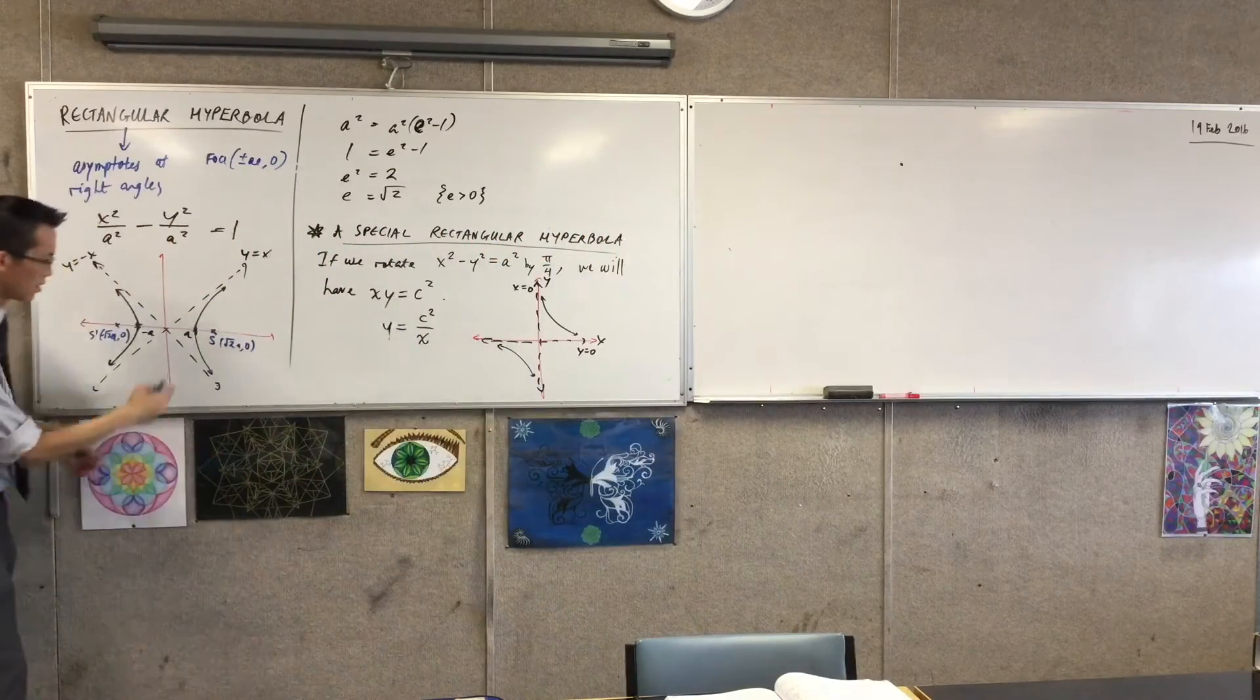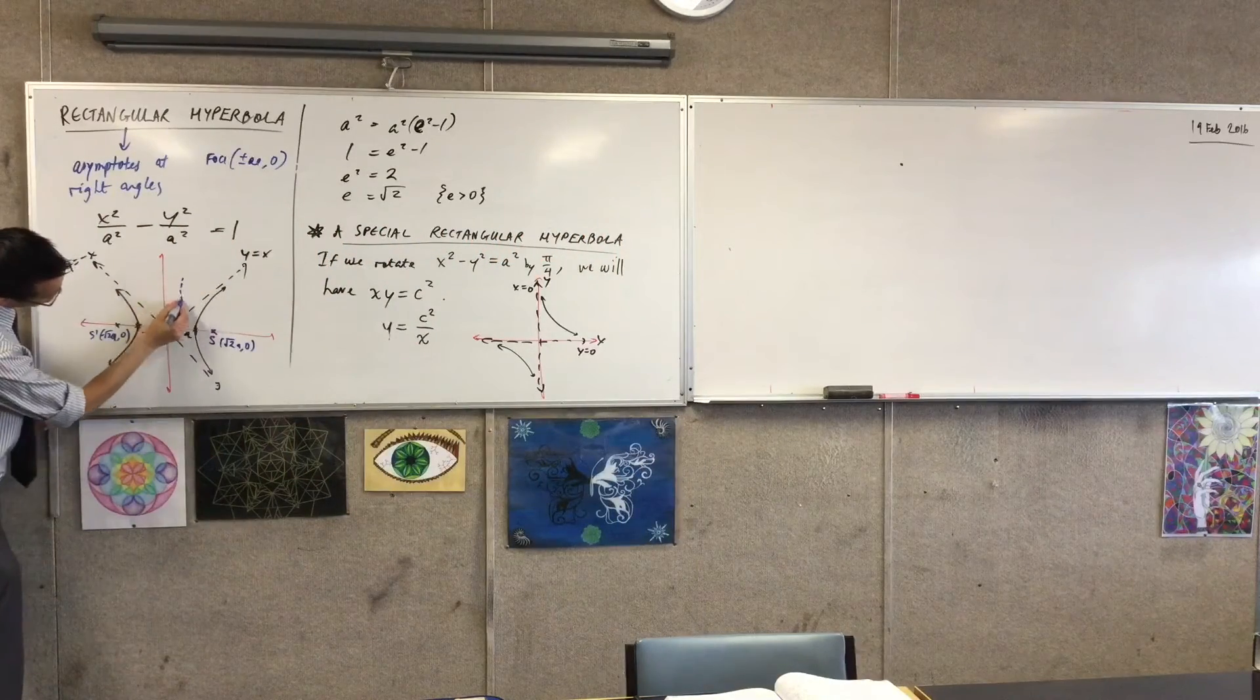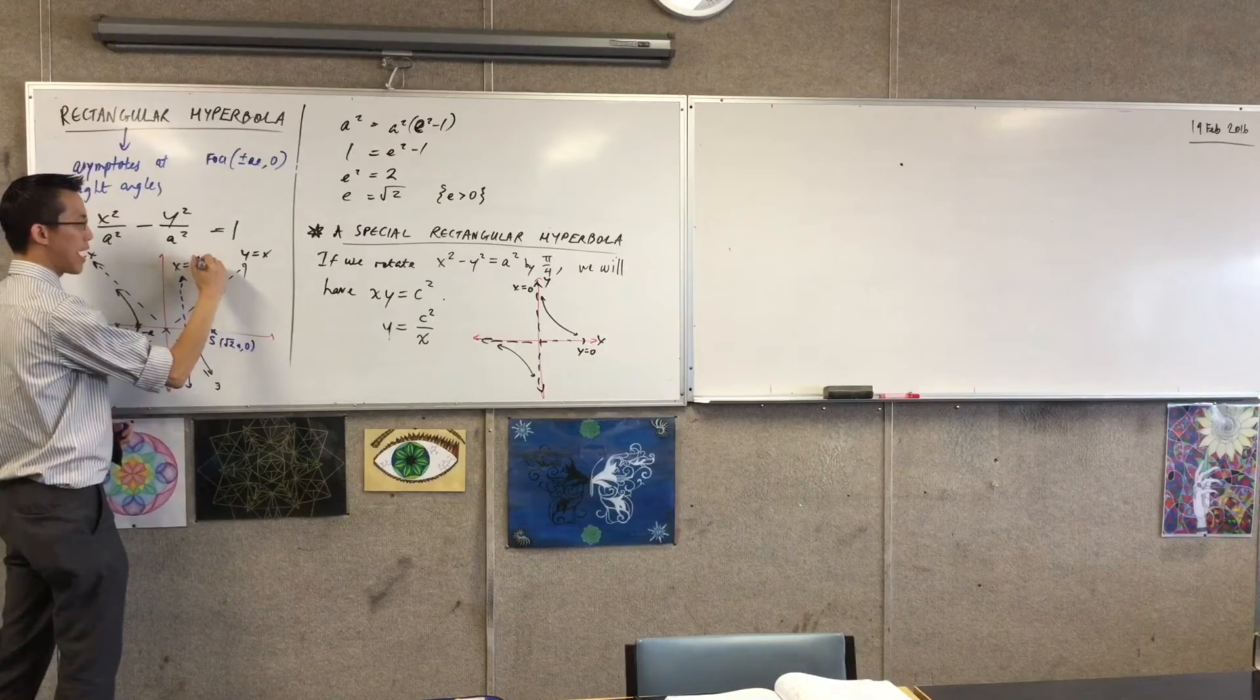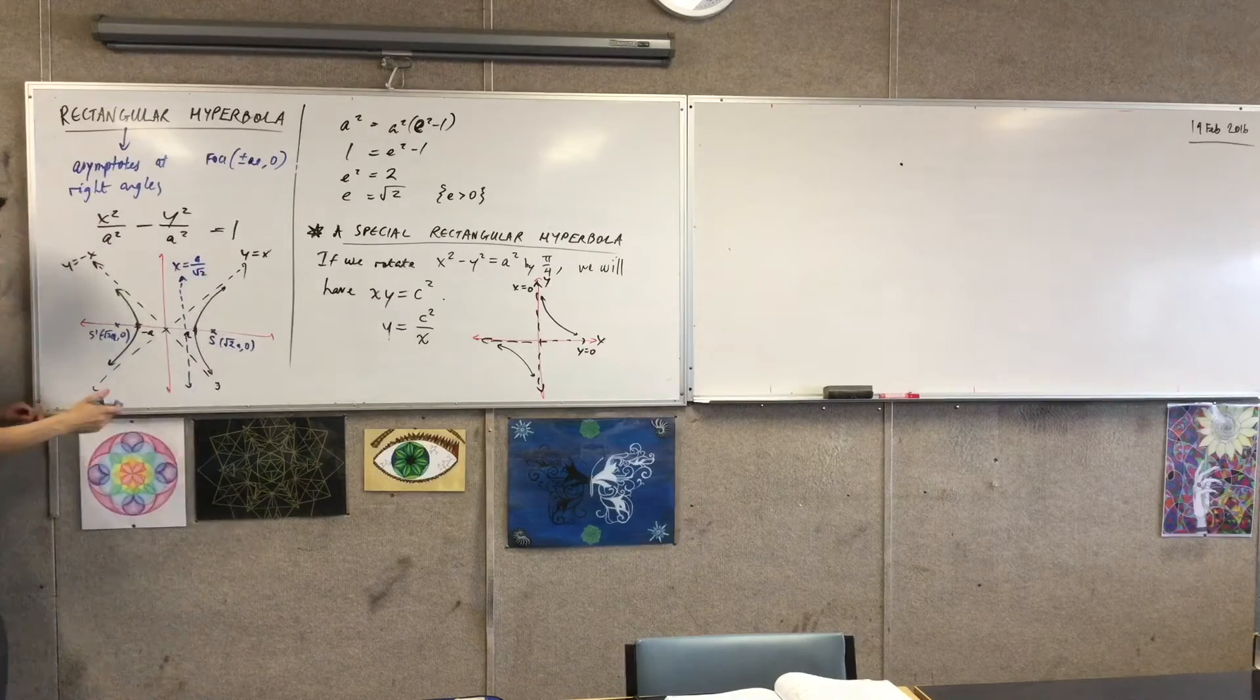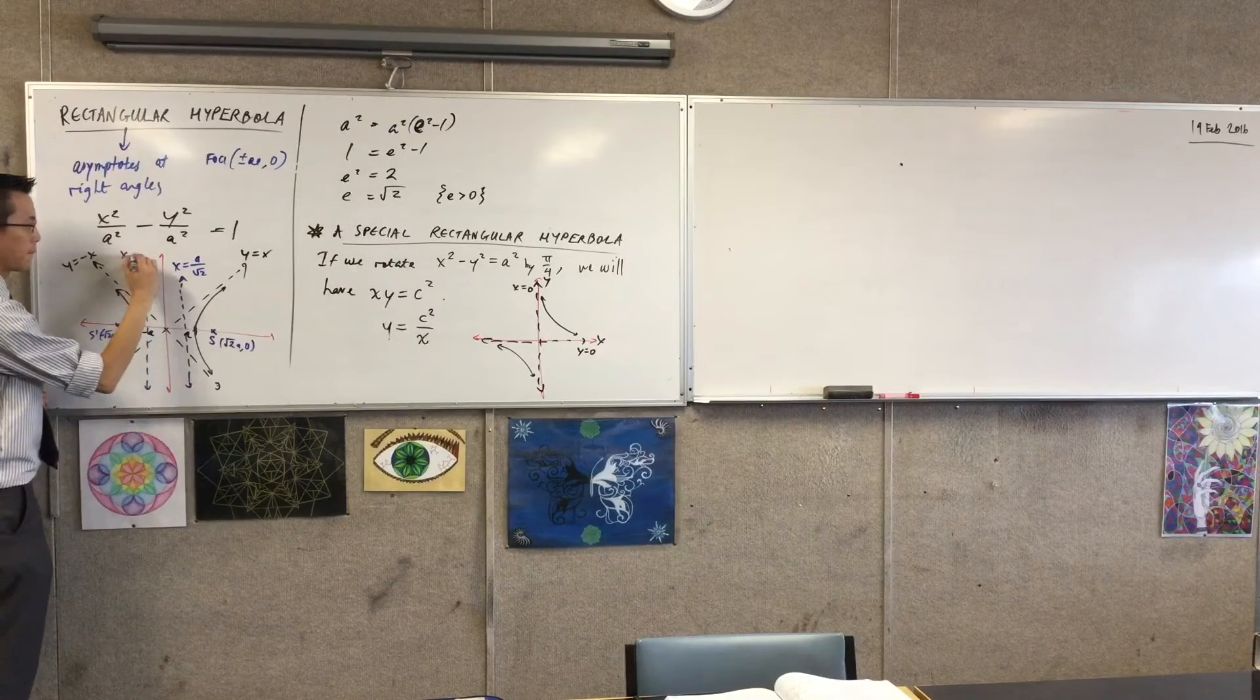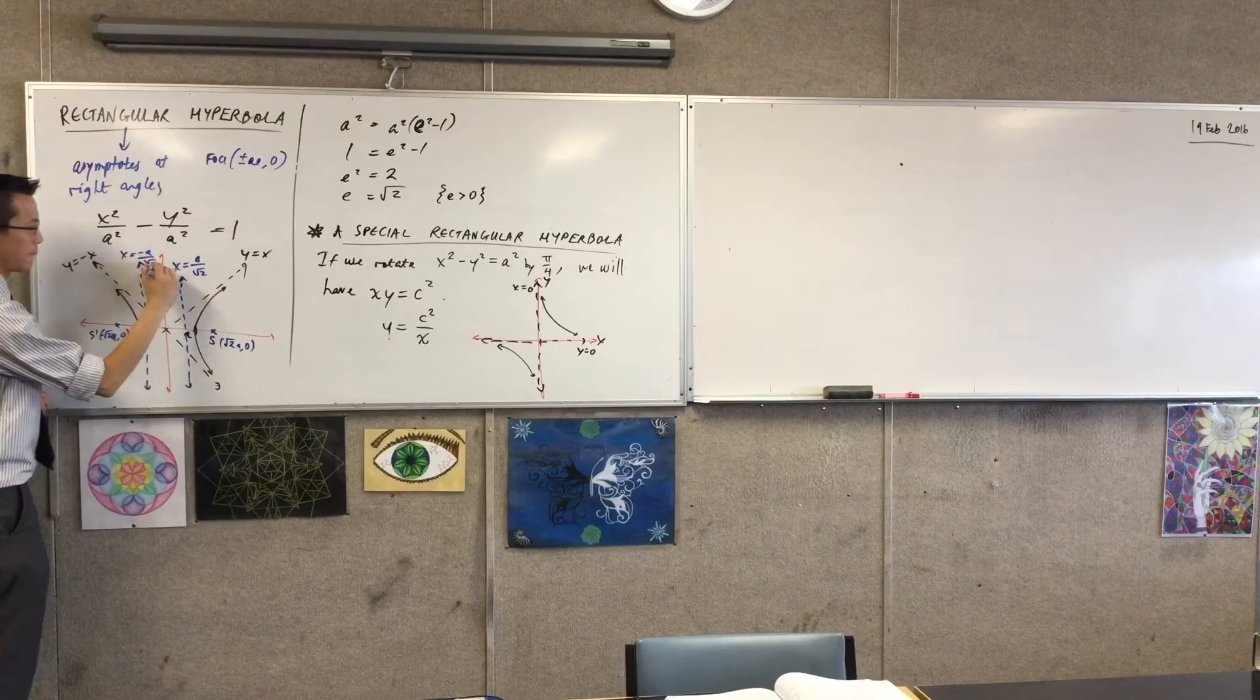So 0.7, I'm coming in here, approximately. So that's X equals A on root two, and you have the mirror image.